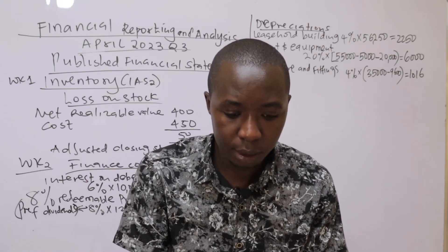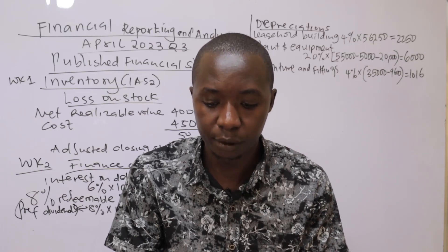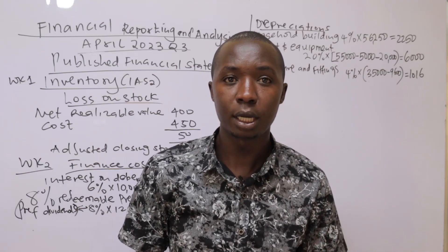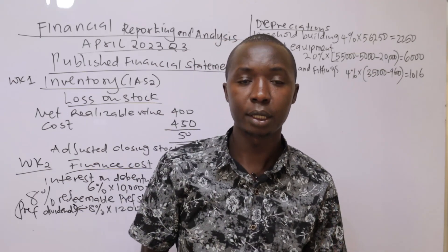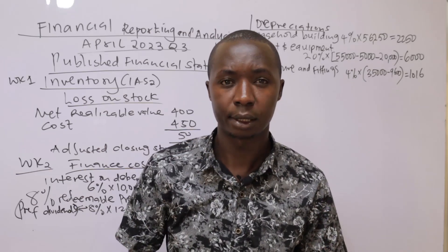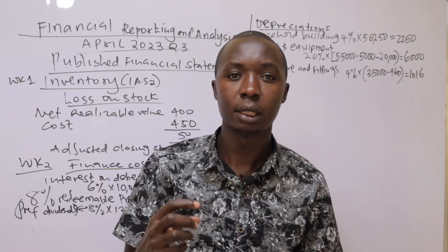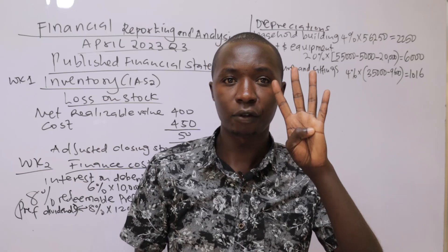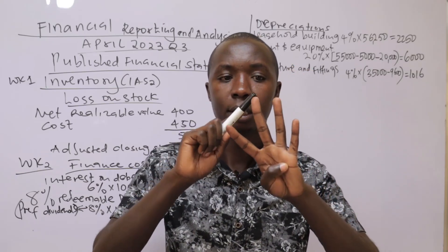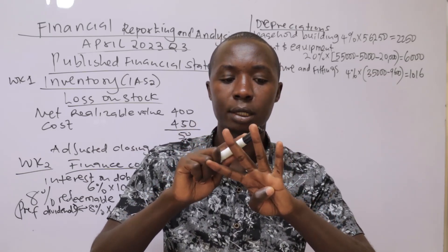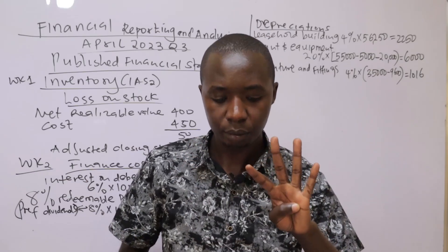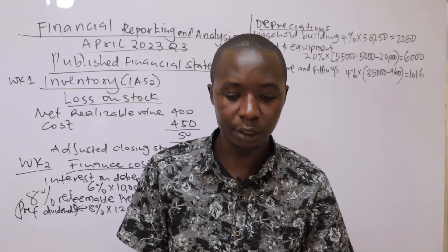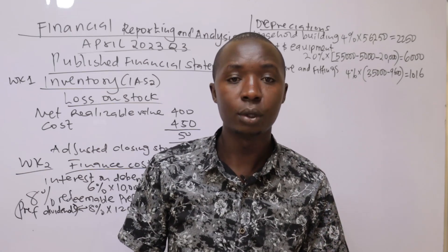Depreciation is classified as a cost of sales expense, except for depreciation on furniture and fittings, which is classified as admin. Under published financial statements, expenses are not shown individually in the income statement but classified under functional heads: cost of sales, administrative costs, selling and distribution, and finance costs.